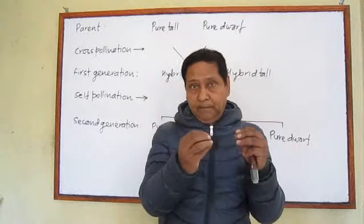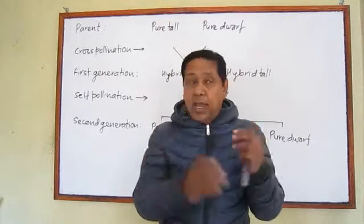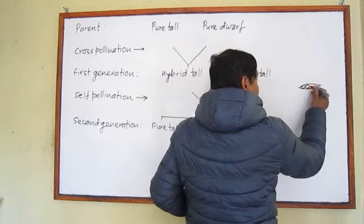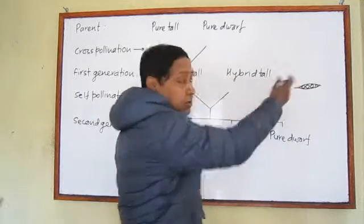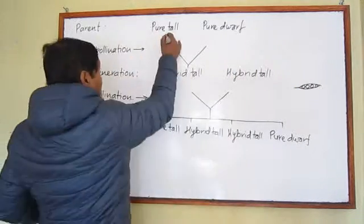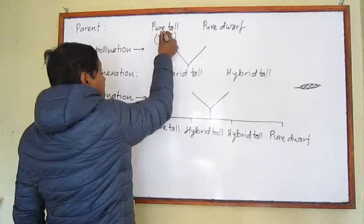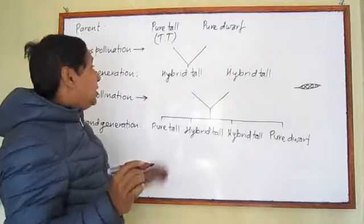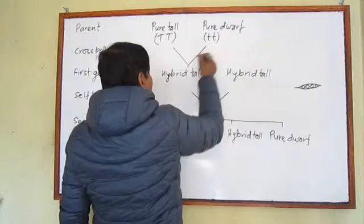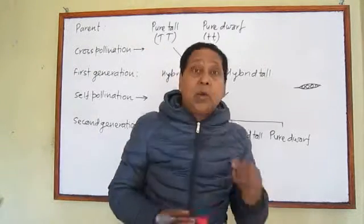The flower was then closed — this is called cross-pollination. After this cross-pollination, the flower dries out and a pea pod appears. The pure tall pea plant has genotype TT, representing both genes for tallness, and he crossed it with a pure dwarf pea plant.